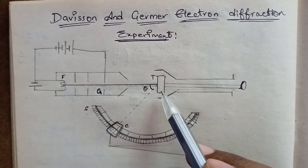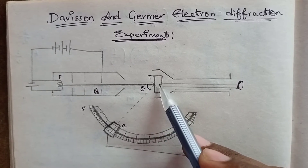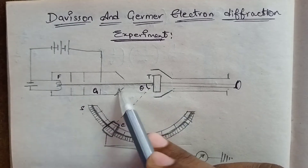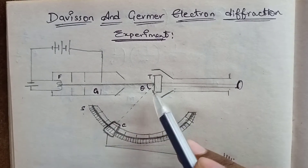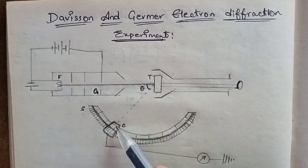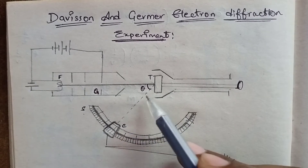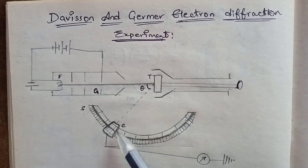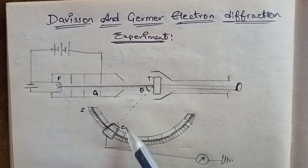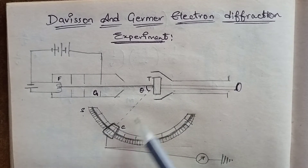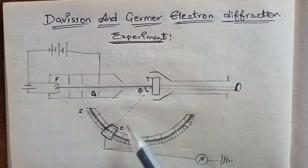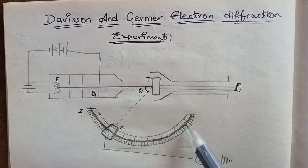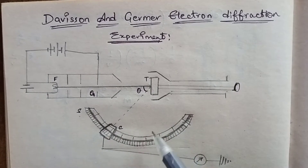Next, this is a target. This target is made of metal. The electrons are going to hit this target and rebound. This angle is theta. The next component is where the rebound happens. This is a Faraday cylinder. And this is a circular scale.